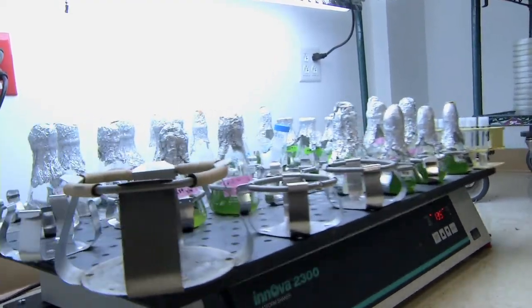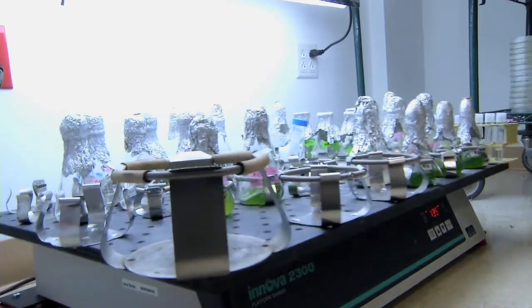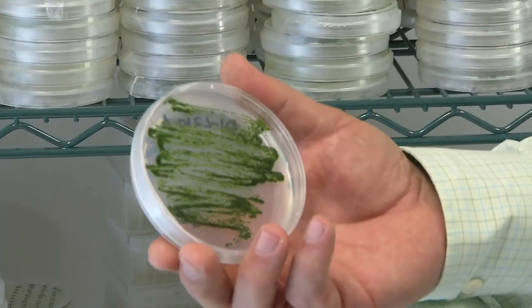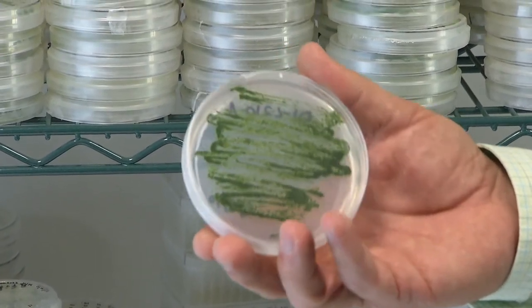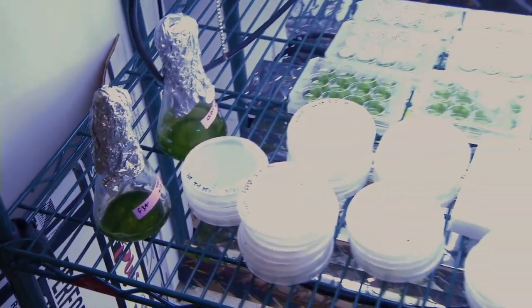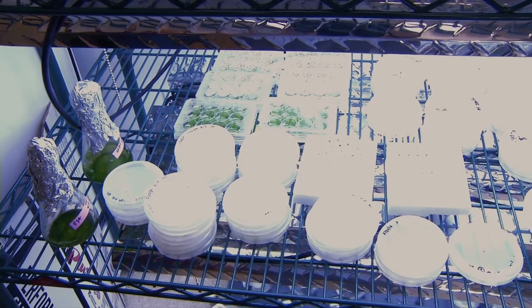In this room, we have algae growing under a variety of different conditions. We have algae behind me on petri dishes. These algae are largely all genetically engineered, and each dish will have a different type of genetic modification. Over the years, we've made many different types of genetic modifications in the algae.